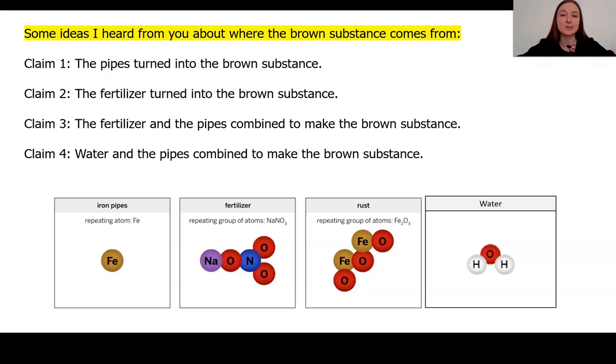And so what I would like you to do is pause the video for a moment and think about what is your idea for where this rust came from? Which claim are you leaning towards at this time and why? What is it about the chemical analysis of the different substances that are making you think that the rust came from one or more of these other things?